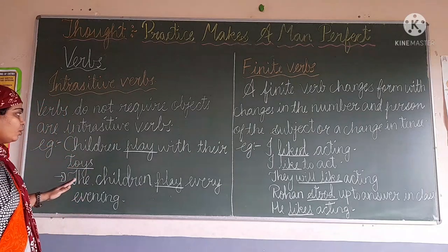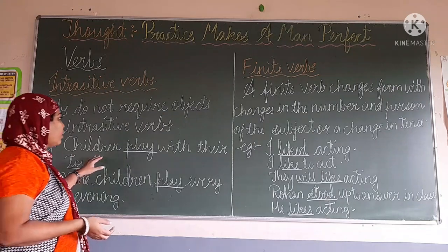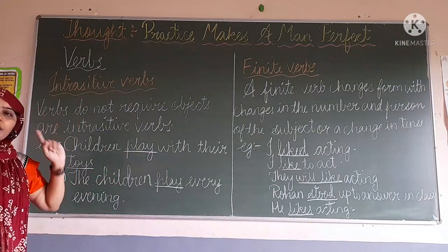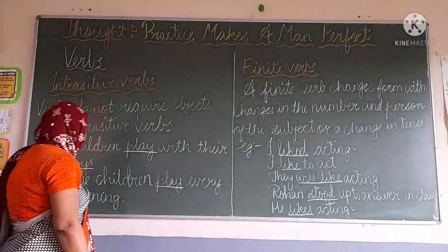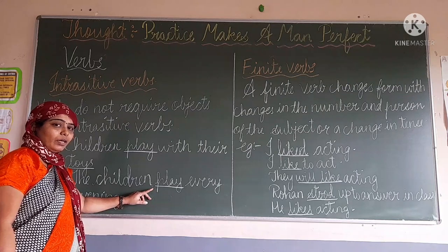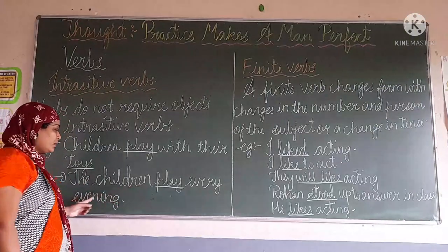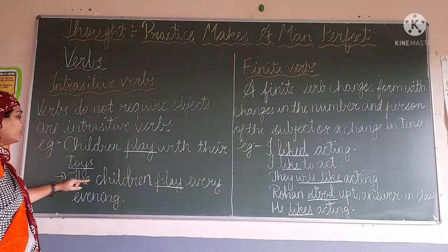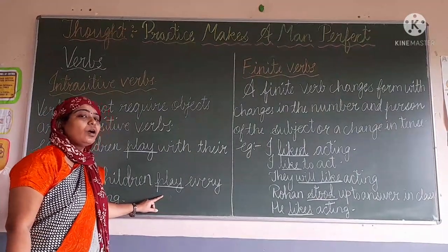Here, which is the object? There is none. Play and toys are both verbs only — they are not objects. So 'children play with their toys' is an intransitive verb. The second example: The children play every evening. There is not a single object in this sentence. So 'play' here is also the intransitive verb — the word 'play' is the intransitive verb.